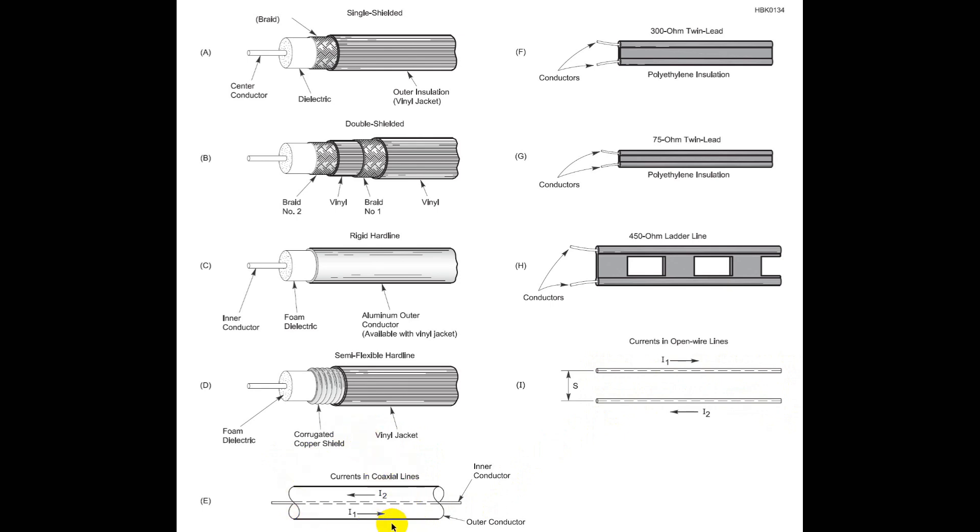In a coaxial line, the outer conductor is at ground potential, and if done properly, should not be conducting. What happens is the center conductor will conduct first in one direction, that's I1, and then in the other direction, that's I2. This is unbalanced line, and hams use both.